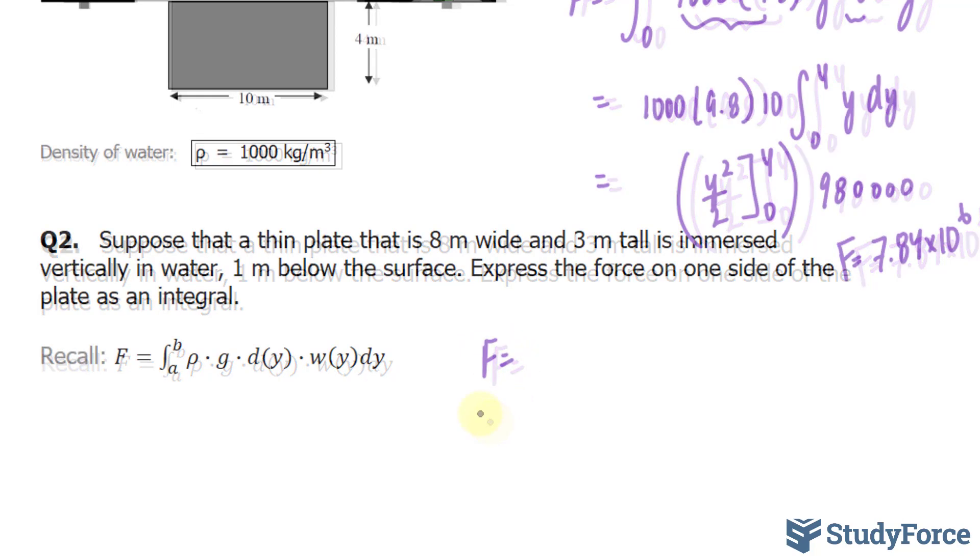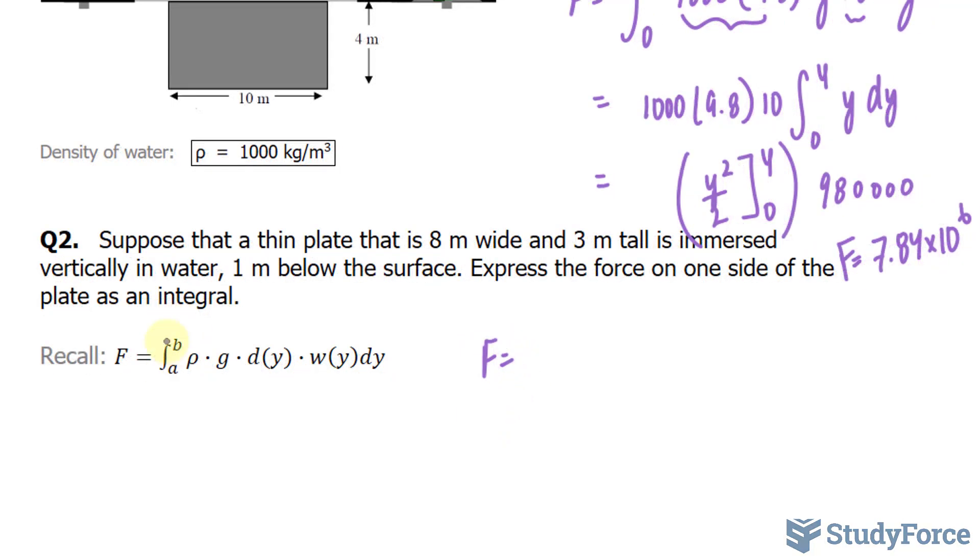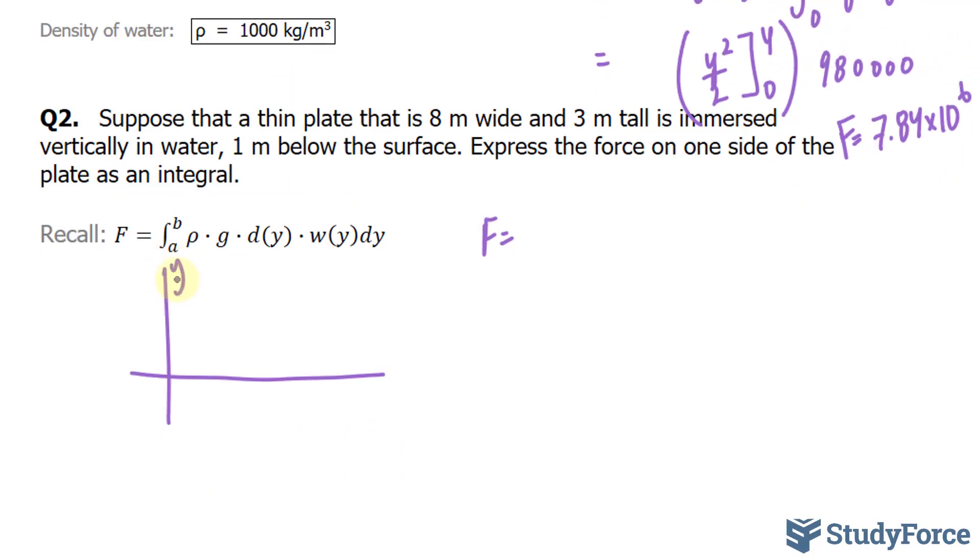F is equal to, and this time, our bounds will be different. So just picture it like this. We have an xy plane, where this is our y-axis, this is our x-axis. This is water, and we have a plate that is 8 meters wide, 3 meters tall. And there is a space of 1 meter from the surface.